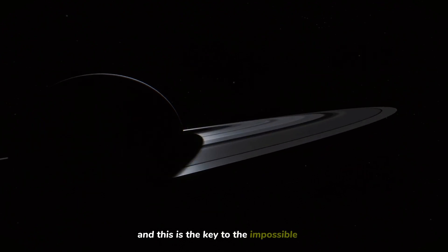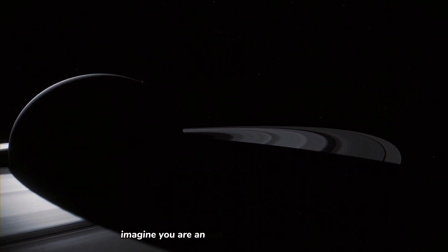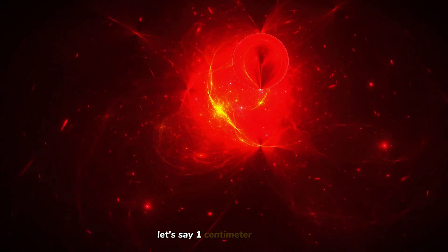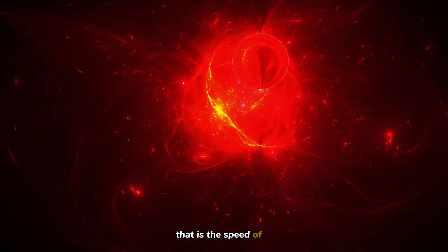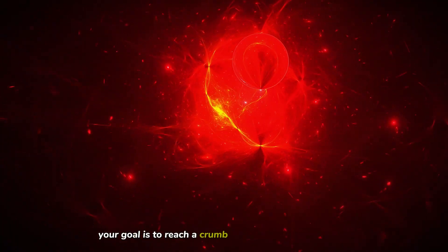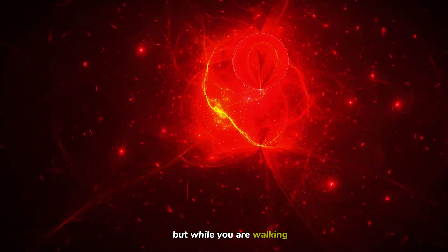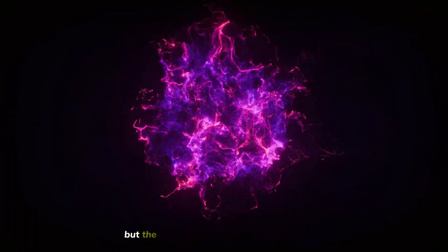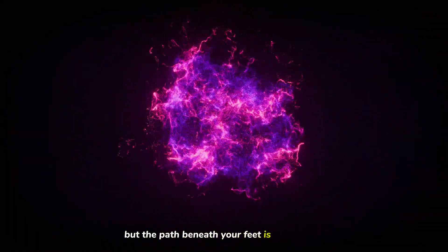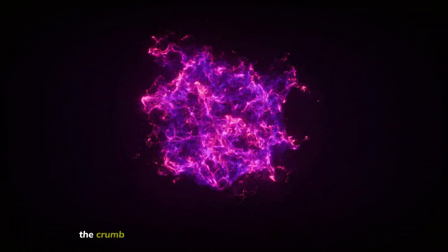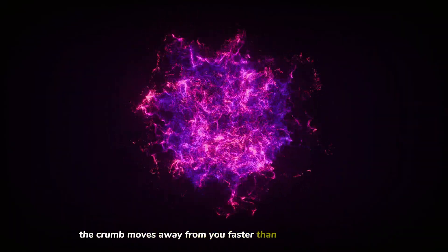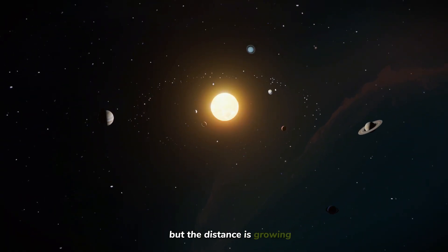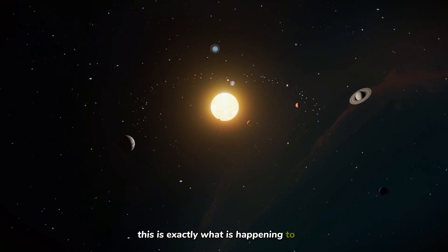And this is the key to the impossible math. Imagine you are an ant walking on a rubber band. You are walking at a constant speed, let's say one centimeter per second. That is the speed of light. Your goal is to reach a crumb at the end of the rubber band. But while you are walking, someone starts stretching the rubber band. You are moving forward, but the path beneath your feet is stretching out. If the stretching is fast enough, the crumb moves away from you faster than you can walk toward it. You haven't slowed down. You are still moving at your top speed. But the distance is growing. This is exactly what is happening to space.